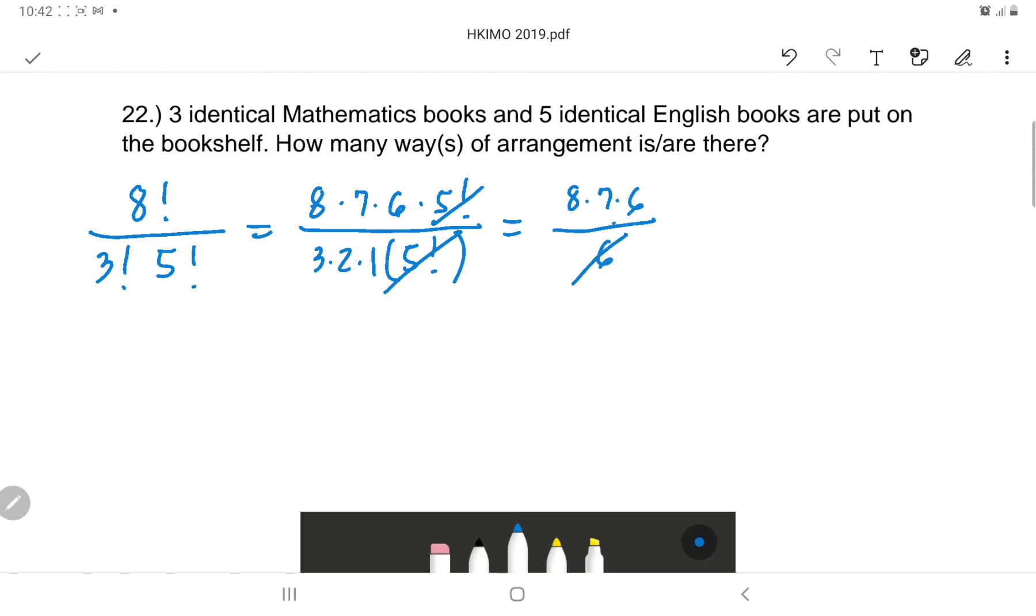is six. You can cancel six, so meaning eight times seven, that is 56. So there are 56 arrangements.